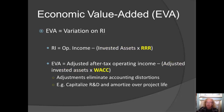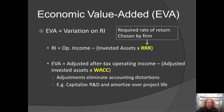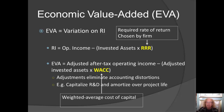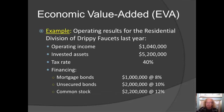The other issue is the choice of the hurdle rate. Residual income uses a required rate of return chosen by the firm, and sometimes that choice could be unrealistically high. By contrast, EVA uses what's called weighted average cost of capital, computed based on the firm's capital structure — that is, based on the firm's choice whether to finance its growth through debt or equity. Let's take a look at an example.